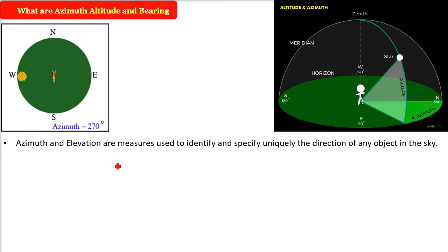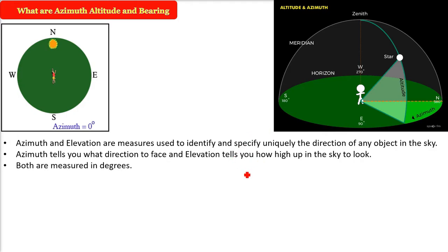Azimuth and elevation are measures used to identify, specify, and locate uniquely the direction of any object in the sky. It's for locating and direction. Azimuth tells you what direction to face. Elevation tells you how high up in the sky you have to look. Both are measured in degrees.